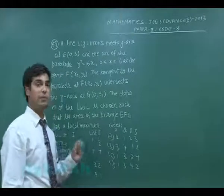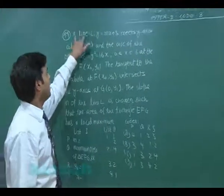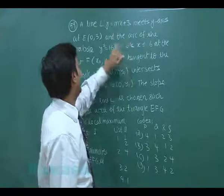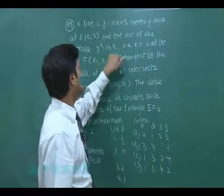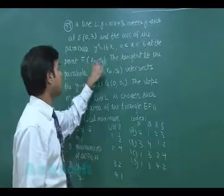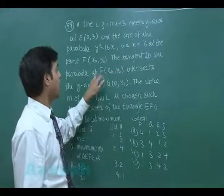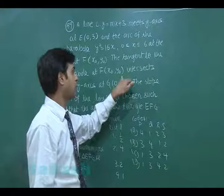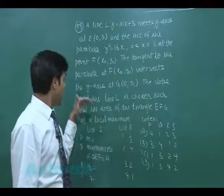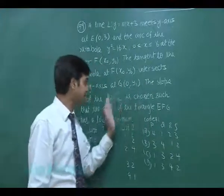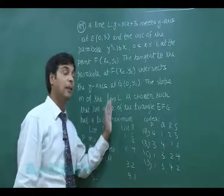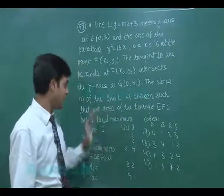Let's talk about question number 59. A line l, y equals mx plus 3, meets the y-axis at E, that is (0, 3), and the arc of the parabola y² equals 16x between x=0 and x=6 at the point F(x₀, y₀). The tangent to the parabola at F(x₀, y₀) intersects the y-axis at G(0, y₁). The slope m of the line l is chosen such that the area of triangle EFG has a local maximum.